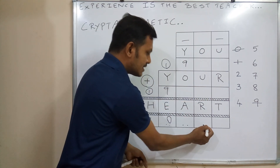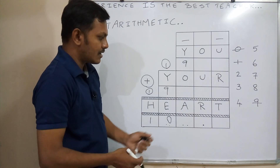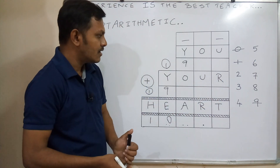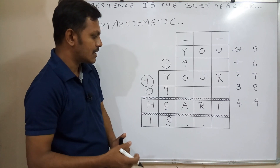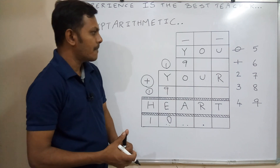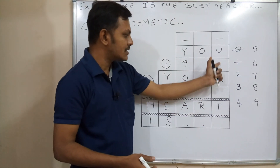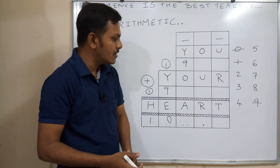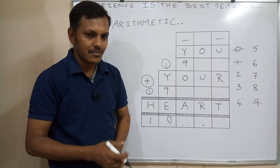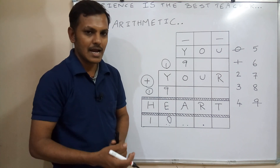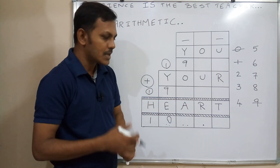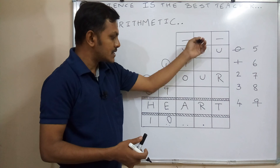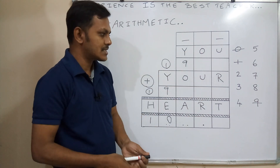Whatever value we assign for O, this column we don't know whether there is carry-over or not — we have to check it. Alphabet U is there. This box is a 2-digit number — we don't know if this box is 2-digit or single-digit. If it is 2-digit, carry-over 1 will come; if single-digit, there is no carry-over. So we will use trial and error method. O and U will get different possibilities — like 2 plus 3 without carry-over gives 5, or 2 plus 3 with carry-over gives 6.